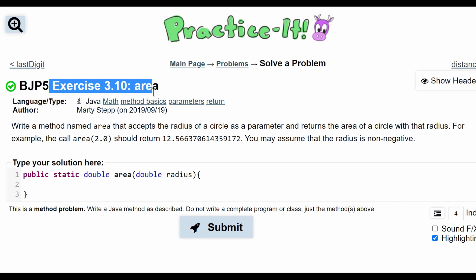For practice exercise 3.10 area, we are asked to write a method named area that accepts the radius of a circle as a parameter and returns the area of a circle with that radius.